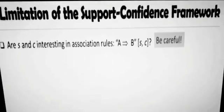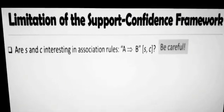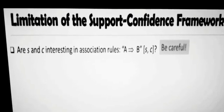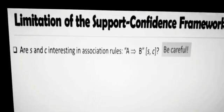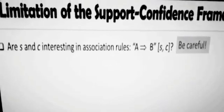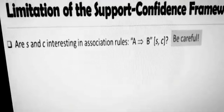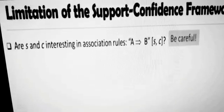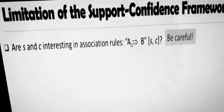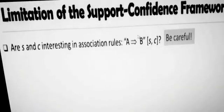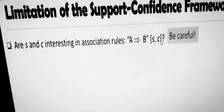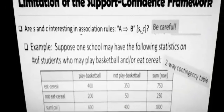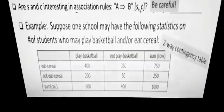Let us come back to support and confidence — the measures we used to generate frequent pattern mining. We will now see whether they are sufficient or whether there are certain limitations. We'll talk about SNC — support and confidence — and whether SNC is really enough to generate interesting association rules. Our association rule has the format A tends to B, and for each rule we calculate support and confidence. But is that enough to generate interesting rules?